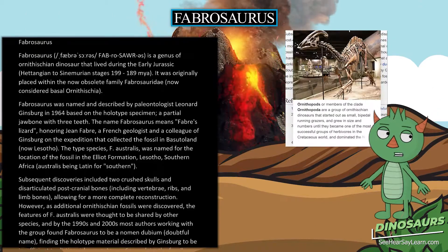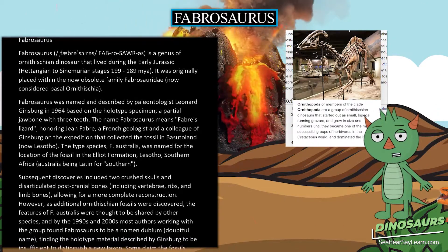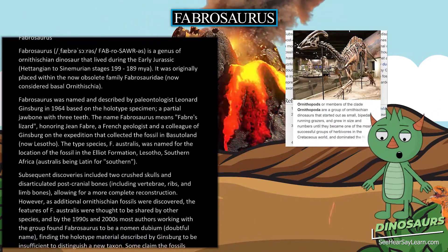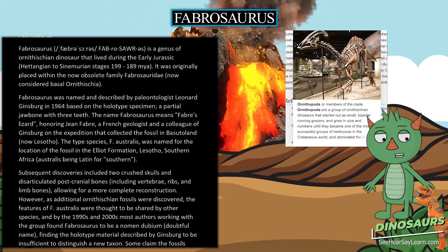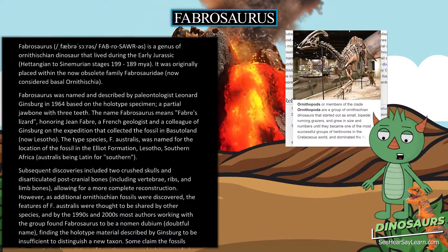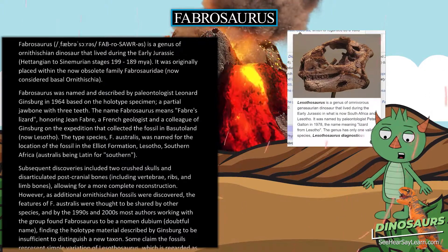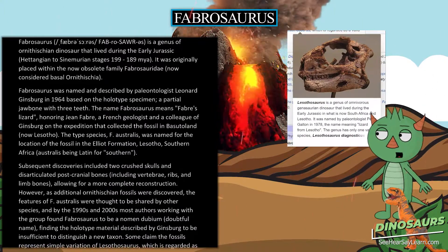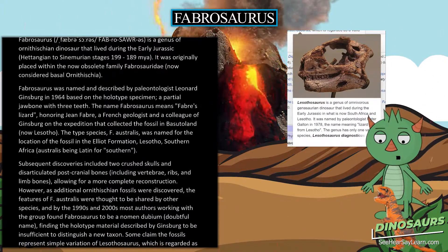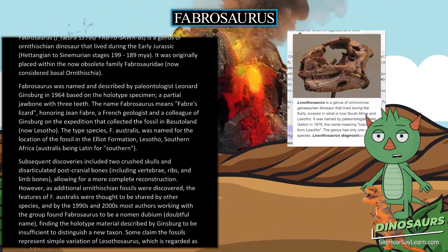The type species, F. Australis, was named for the location of the fossil in the Elliott Formation, Lesotho, southern Africa — Australis being Latin for southern.